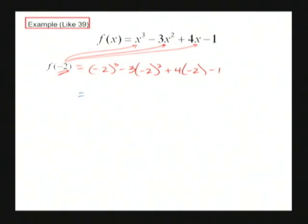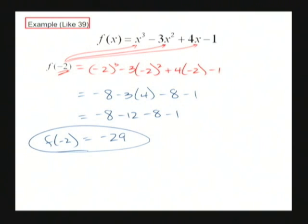And then from there, we'll just simplify. Negative 2 to the third is negative 8. We've got negative 3 times positive 4 minus 8 minus 1. So it's negative 8 minus 12 minus 8 minus 1. Looks to me like negative 29. So in other words, when my x value is negative 2, the corresponding y value or the output value is negative 29. Easy enough.